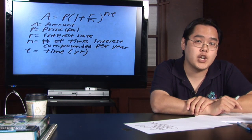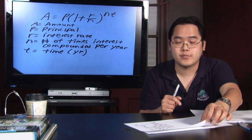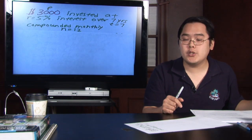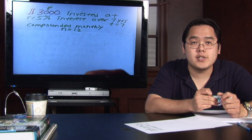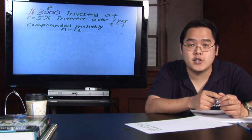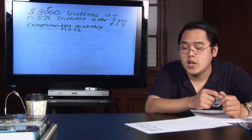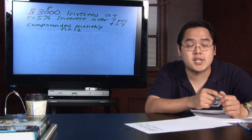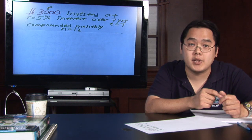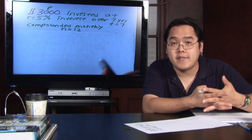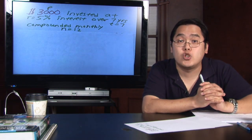Let's go over a really quick scenario here for you. Suppose you have $3,000 invested, that's your P, invested at 5%, that's going to be your rate of interest, over seven years time, so T would be seven, and compounded monthly. Because there's 12 months out of the year, N is going to be 12.